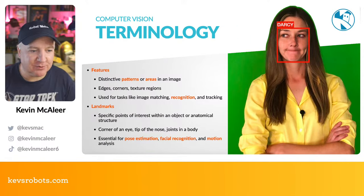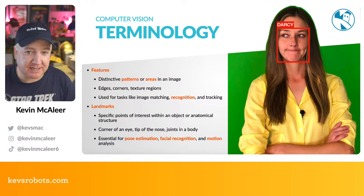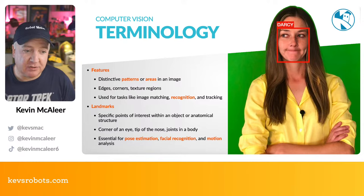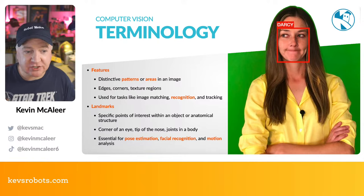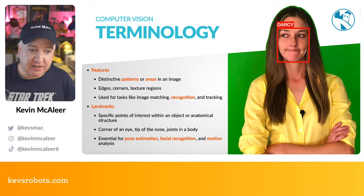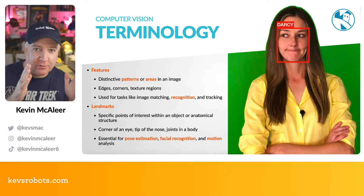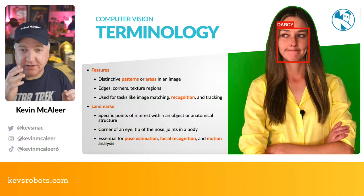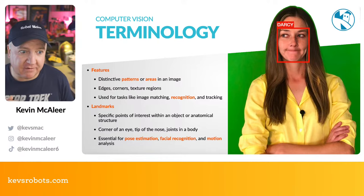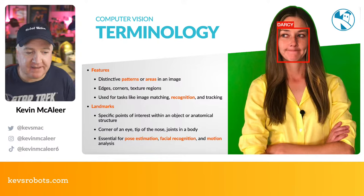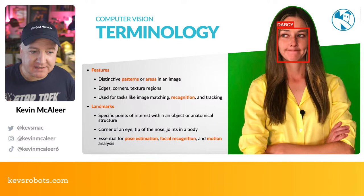Let's get through some terminology. 'Features' is something you'll hear a lot in computer vision - these are distinctive patterns or areas within an image that we're interested in detecting. These can be edges, corners, or texture regions, and they're used for tasks like image matching, recognition, and tracking. You'll see this in modern phone apps where an object stays in focus, typically a face or eyes.